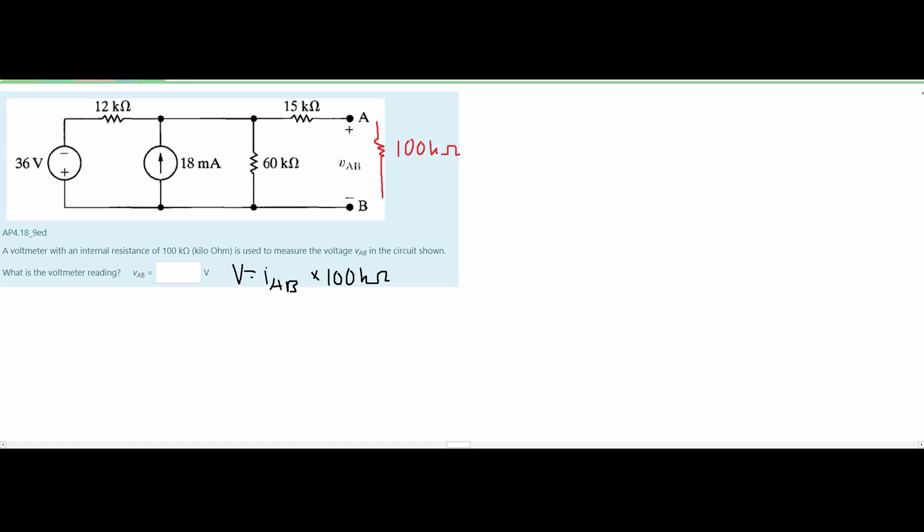Since it is going up, that means when we rewrite this using source transformations that our current is going to be going down. So our voltage is going like this and our current is going down.